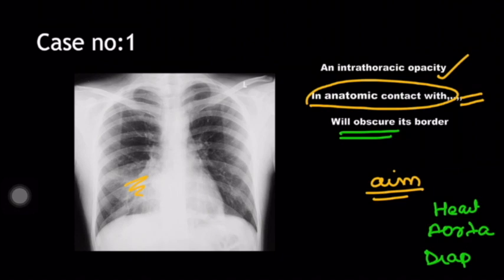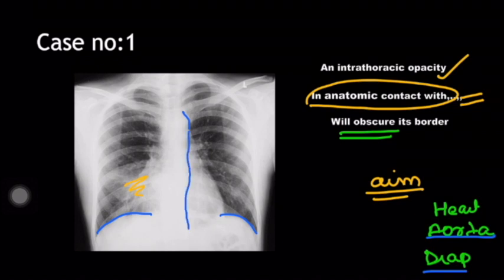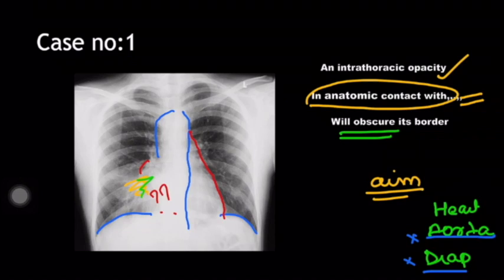Is this opacity obscuring the diaphragm? No — you can see the diaphragm clearly on either side. What about the aorta? This is the aortic knuckle, you have the descending aortic line here. Ascending aorta will be somewhere here because we know ascending aorta forms the right upper heart border. So the aorta is also not obscured. What is remaining? The heart. You can see the left heart border — it's clear. But the right heart border is not clearly seen, so the lesion is obscuring the right cardiac border.